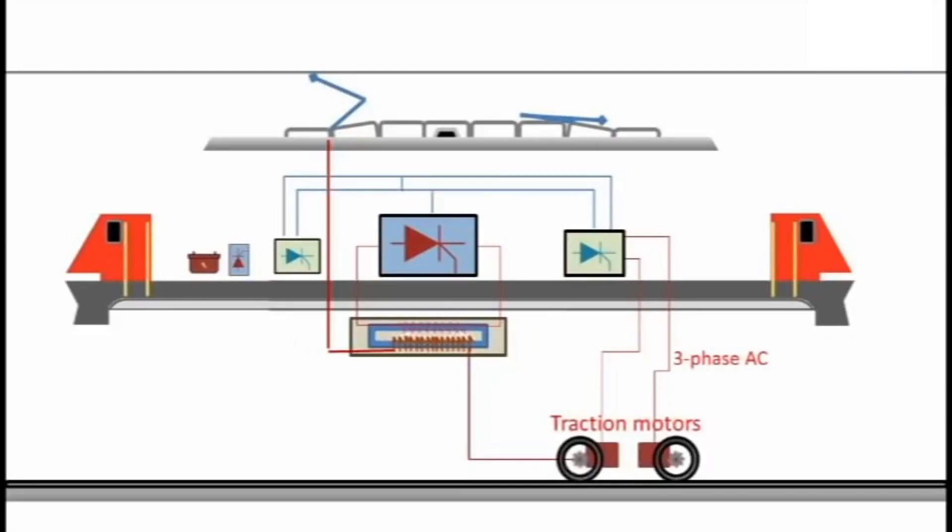For the traction motors to efficiently drive the wheels, many small but important components are also needed. Auxiliary inverters and rectifiers power these smaller components.